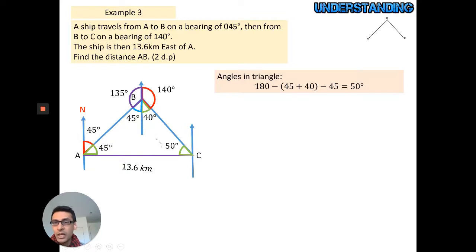We just use the sine rule: A over sine 50 equals 13.6 over sine 85. Multiply both sides by sine 50, and you get your answer, which is 10.46 to two decimal places.